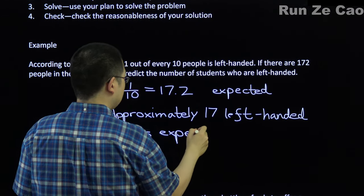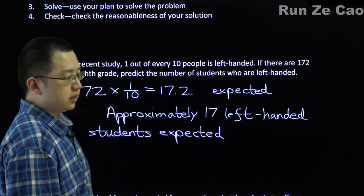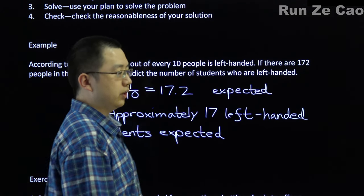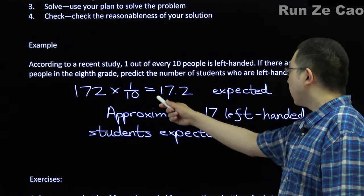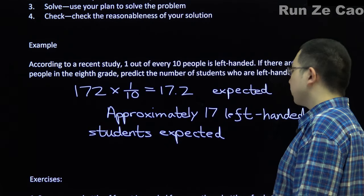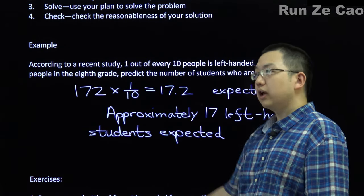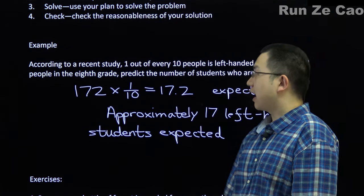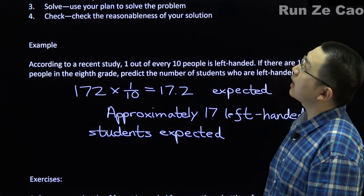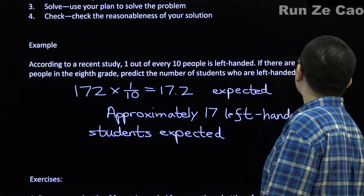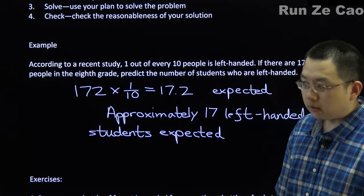However, since it's kind of hard to have 0.2 of a left-handed person, the statement would probably be approximately 17 left-handed students are expected. So when we explore the problem, 1/10 of the people are left-handed, there are 172 people, therefore 1/10 of 172. We plan, solve, and check: 17 is about 1/10 of 172. Wonderful. It's reasonable.